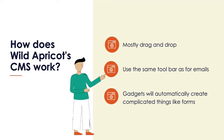Additionally, the gadgets we provide will automatically create complicated things like forms. So if you're thinking you may have to learn some HTML to build a form and have it automatically talk to Wild Apricot — worry not, the system will take care of that for you. It's all automatically generated based on the information you've entered into the back end in earlier steps.